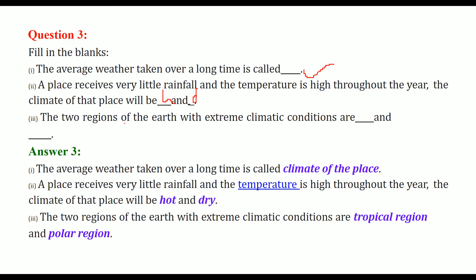The two regions of earth with extreme climatic conditions are the tropical region and the polar region.